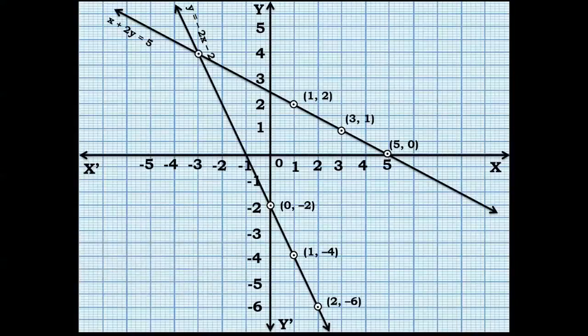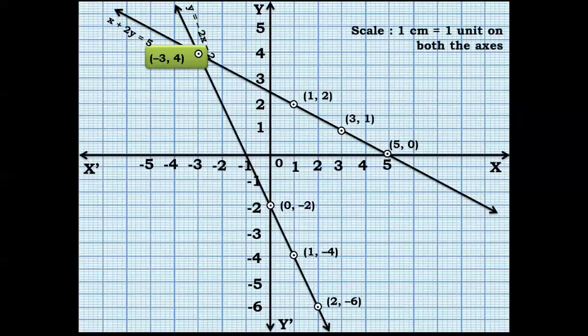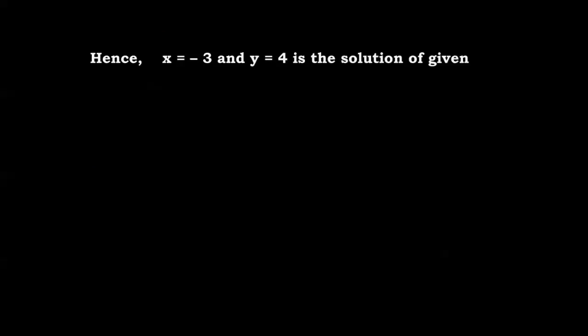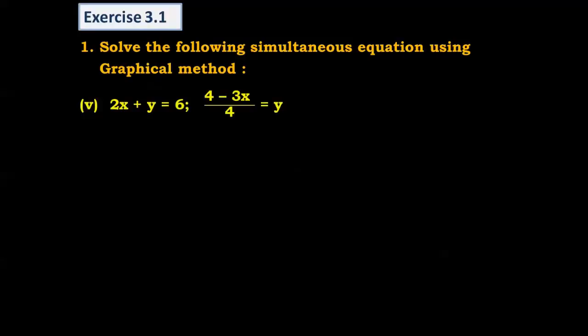The point of intersection of both lines gives the solution. The x-coordinate is -3 and the y-coordinate is 4. So the solution is x = -3 and y = 4. Remember to write the scale on the graph paper: one centimeter equals one unit on both axes. Hence, x = -3 and y = 4 is the solution of the given simultaneous equations.